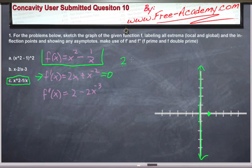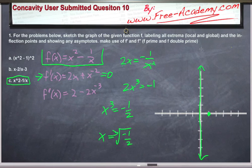So this is going to be 2x is equal to negative 1 over x squared. So 2x to the third equals negative 1, or x to the third equals negative 1 half. So x equals the third root of negative 1 half. So our critical point, we only have 1, is the third root of negative 1 half.